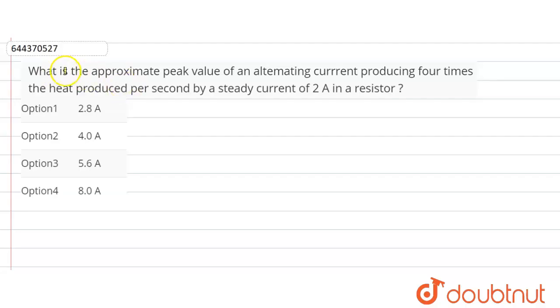Hello friends, the question is: What is the approximate peak value of an alternating current producing four times the heat produced per second by a steady current of 2 ampere in a resistor?